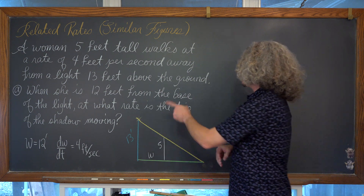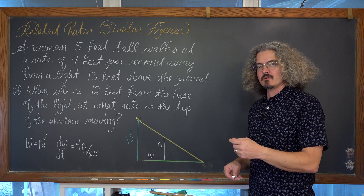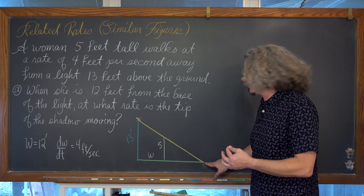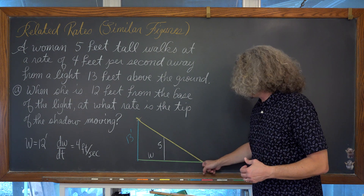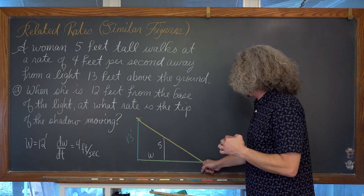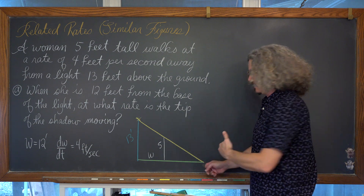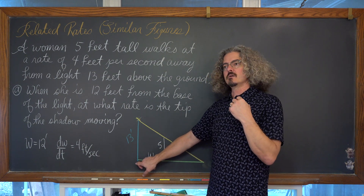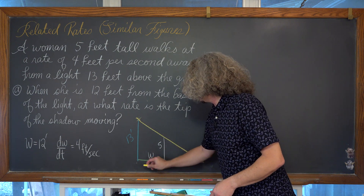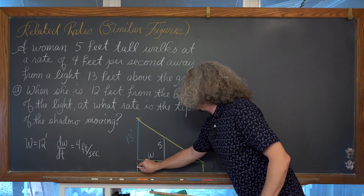When she's 12 feet from the base of the light, at what rate is the tip of the shadow moving? There are two influences on where the end of the shadow is: how far she is away from the light and how far she's moving. The fixed item in this picture is the light pole, so we need a variable marking the distance between the light and the tip of the shadow — we'll call that x.